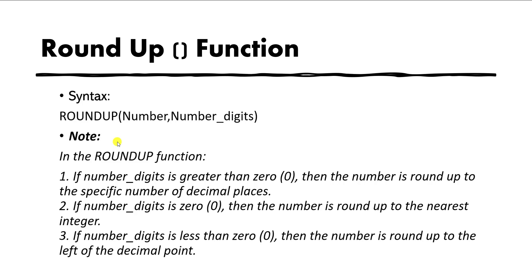When creating a Roundup function, you should follow these points: if number_digits is greater than 0, then the number is rounded up to the specific number of decimal places. If number_digits is 0, then the number is rounded up to the nearest integer. And if number_digits is less than 0, then the number is rounded up to the left of the decimal point.